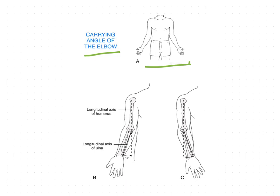The anatomical position of the upper extremity is where the shoulder is in external rotation, the elbow is in extension, and the forearm is fully supinated. In this position, the long axis of the humerus and the long axis of the forearm form an acute angle medially when they meet at the elbow.